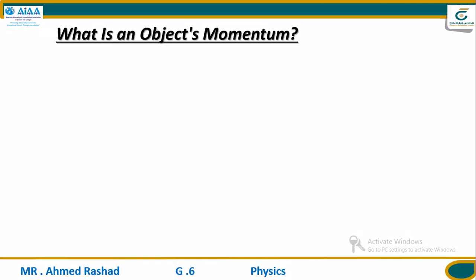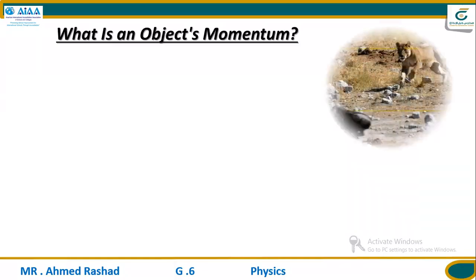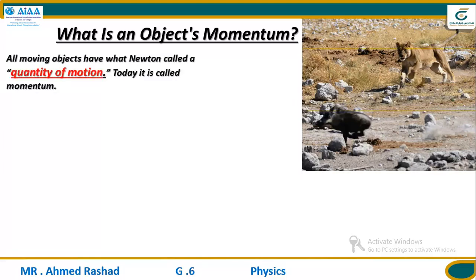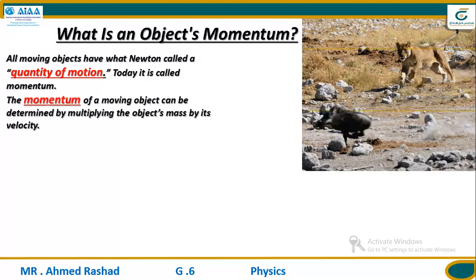How can we describe or calculate the momentum of an object in motion? Any object has velocity and mass. If I put the mass and the velocity of an object in relationship, I find the momentum. Newton called this the 'quantity of motion,' but today we call it momentum. Momentum is determined by multiplying mass by velocity — that's the quantity of motion.